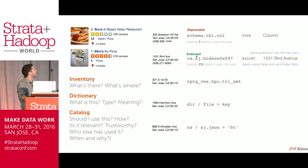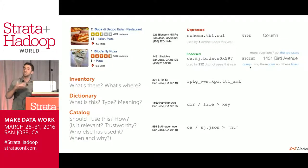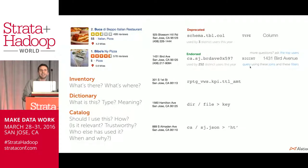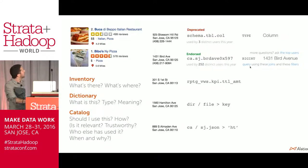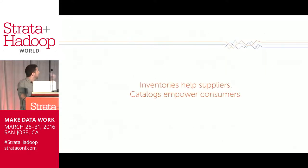For data, the catalog might provide information like: is this deprecated or endorsed? How many people have used it recently? If I have a question, who can I ask — kind of like a phone number. What are the right ways to query or script this thing? And like Yelp saying 'must try the meatballs,' there's the opportunity to go from inventory and dictionary to catalog. Inventories help suppliers. Catalogs empower consumers. That's the bottom line.